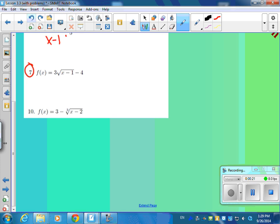Well, you set x minus 1 greater than or equal to zero because you can't take the square root of a negative number. Right? So x will be greater than or equal to 1. My domain then will be x greater than or equal to 1.